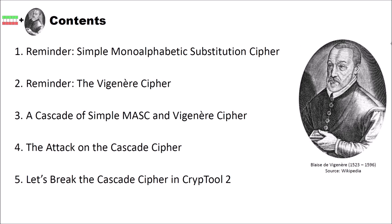We structured this video into five different parts. In the first part, we will have a reminder of the simple monoalphabetic substitution cipher. After that, we will have a reminder of the Vigenère cipher. On the right side you can see not the inventor of the Vigenère cipher, but the one whose name was used to name it. Blaise de Vigenère didn't invent the Vigenère cipher but the autokey cipher. Then in part 3, we will see how a cascade of MASC and Vigenère works. After that, I will present the attack, and finally we will build and execute the attack in CrypTool2.